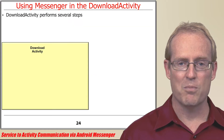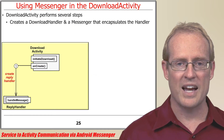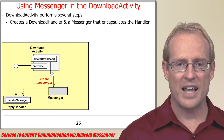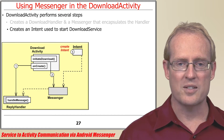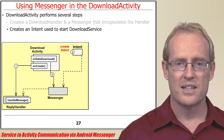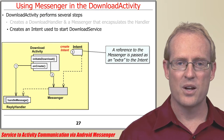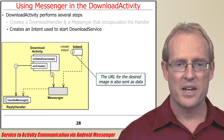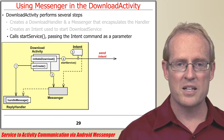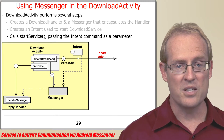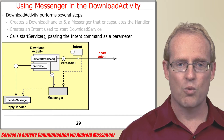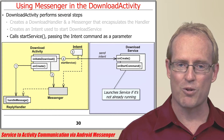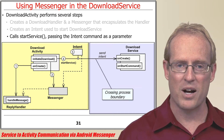The download activity performs several steps. It first creates the download handler and then creates a Messenger that encapsulates a reference to the handler. Download activity next creates an intent used to start the download service. The Messenger is passed as an extra to the intent, which also stores the URL for the desired image to download as data. Finally, download activity calls startService, passing the intent command as a parameter. This configuration runs the download service in a separate process, so the Android activity manager service launches the service if it's not already running, and sends the intent across the process boundary.